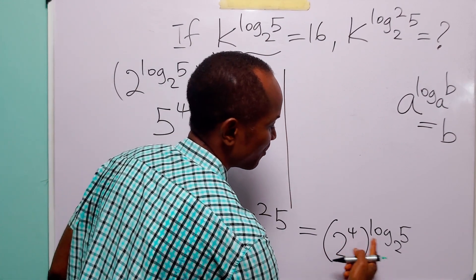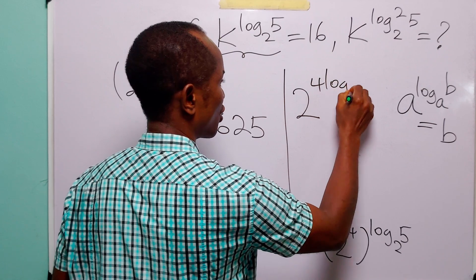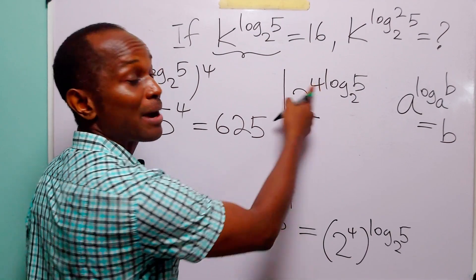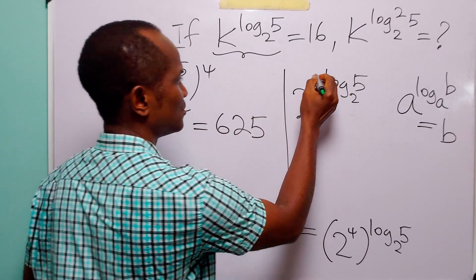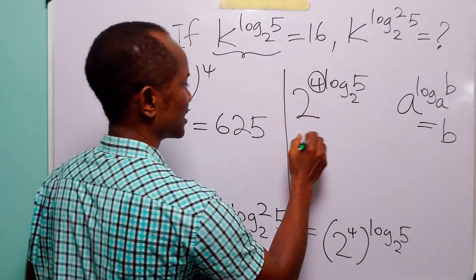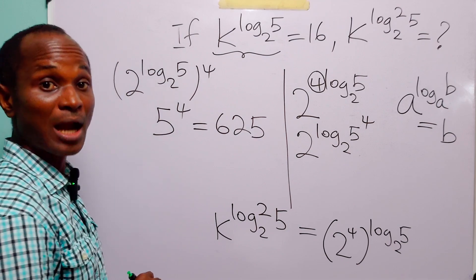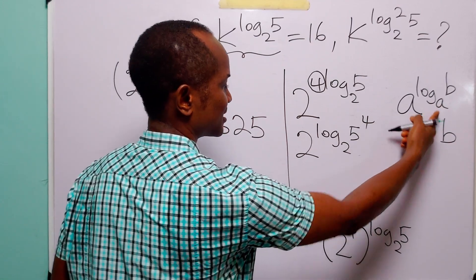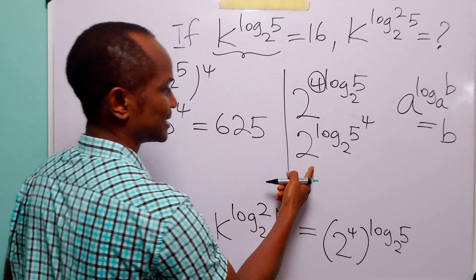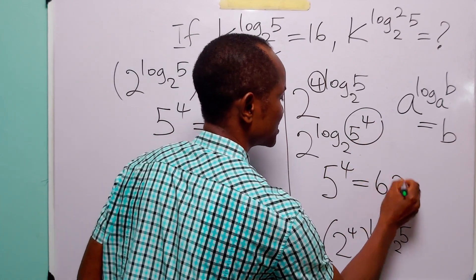In the second method, we simply multiply the two powers to get 2 to the power 4·log₂(5). We then apply the power rule, meaning we take the multiplier 4 to become an exponent of 5, writing it as 2 to the power log₂(5⁴). Since a^(logₐb) = b, this simplifies to 5 to the power 4, which is once more equal to 625.